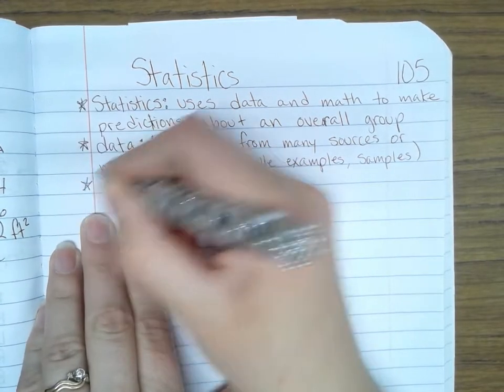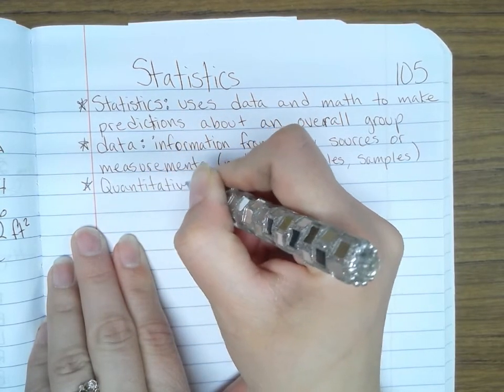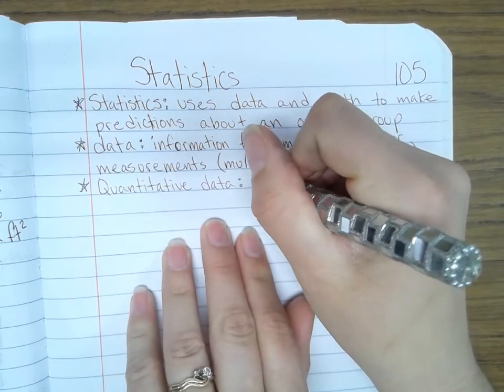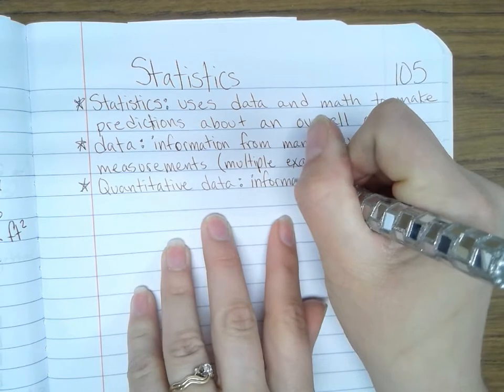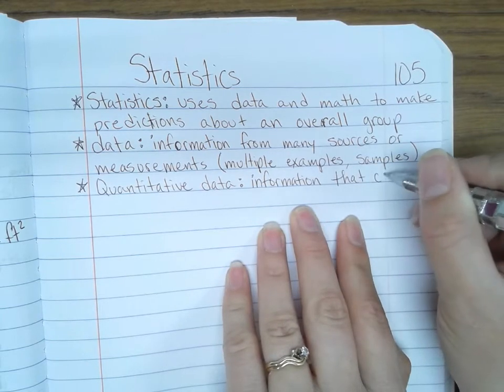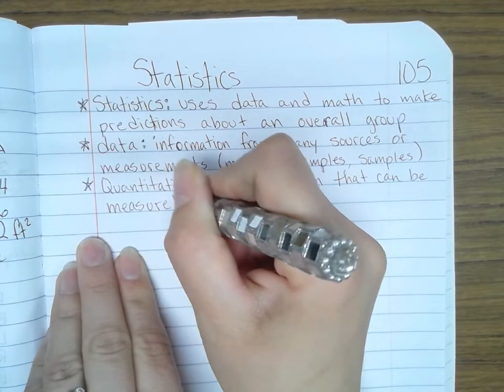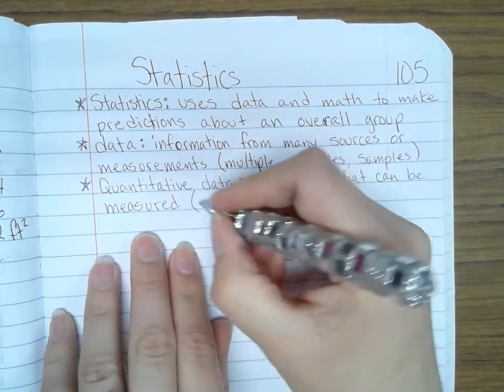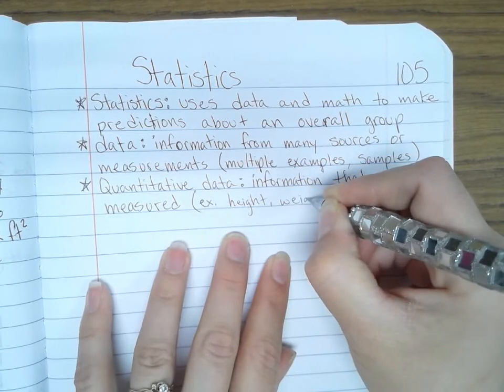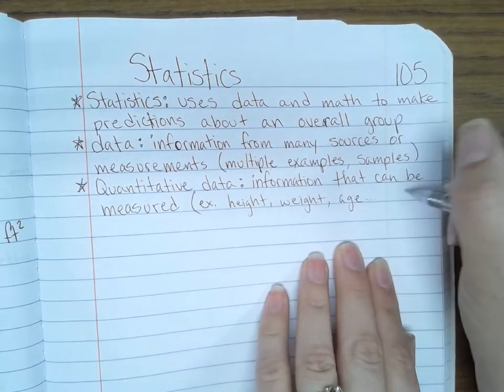There are two kinds of data. We have quantitative data. Quantitative means information that can be measured. Examples could be like height, weight, age. They're all numbers.